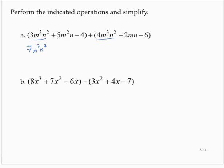Now, the 5m squared n doesn't combine with anything else, so I'll just leave it alone. Similarly, the minus 2mn doesn't combine with anything. And then we have a minus 4 and a minus 6. Those combine to a negative 10.